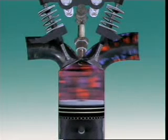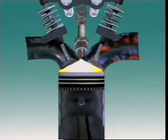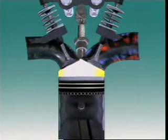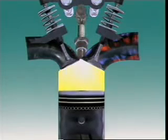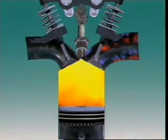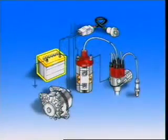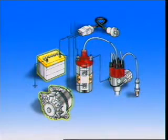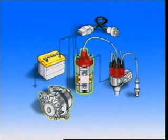The ignition system provides high intensity sparks at the spark plugs to ignite the fuel charges in the combustion chambers. The sparks must be supplied at the right time and they must have sufficient energy over a range of conditions to ignite the charges. The energy comes from the battery and alternator and the voltage is increased by the ignition coil.